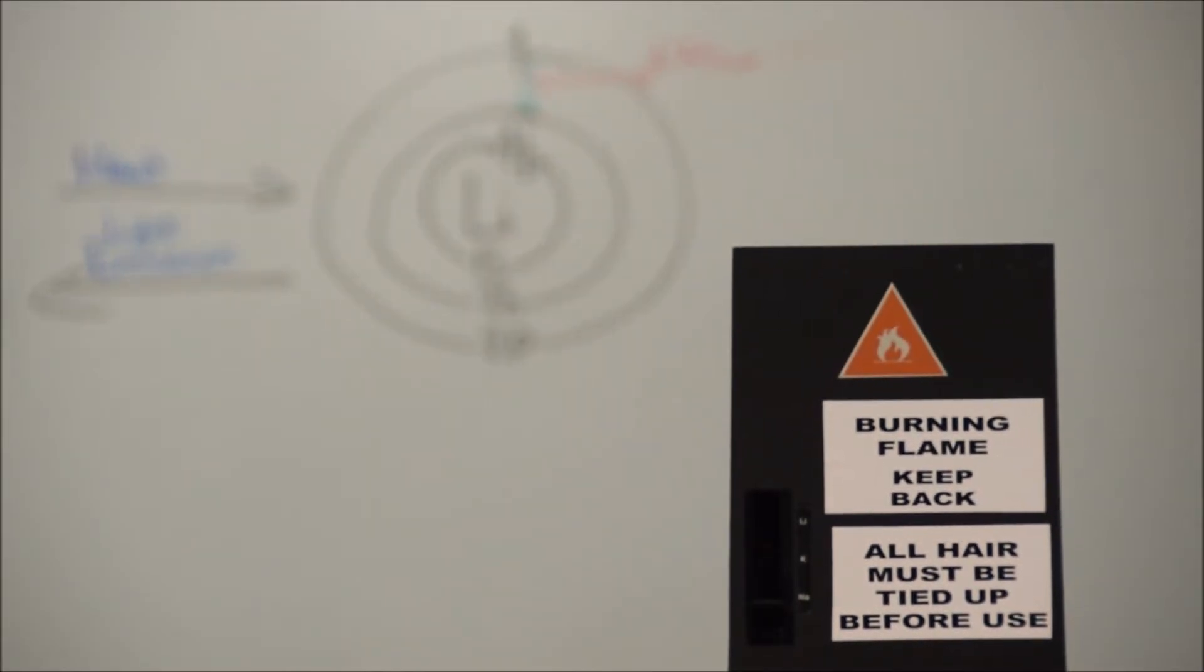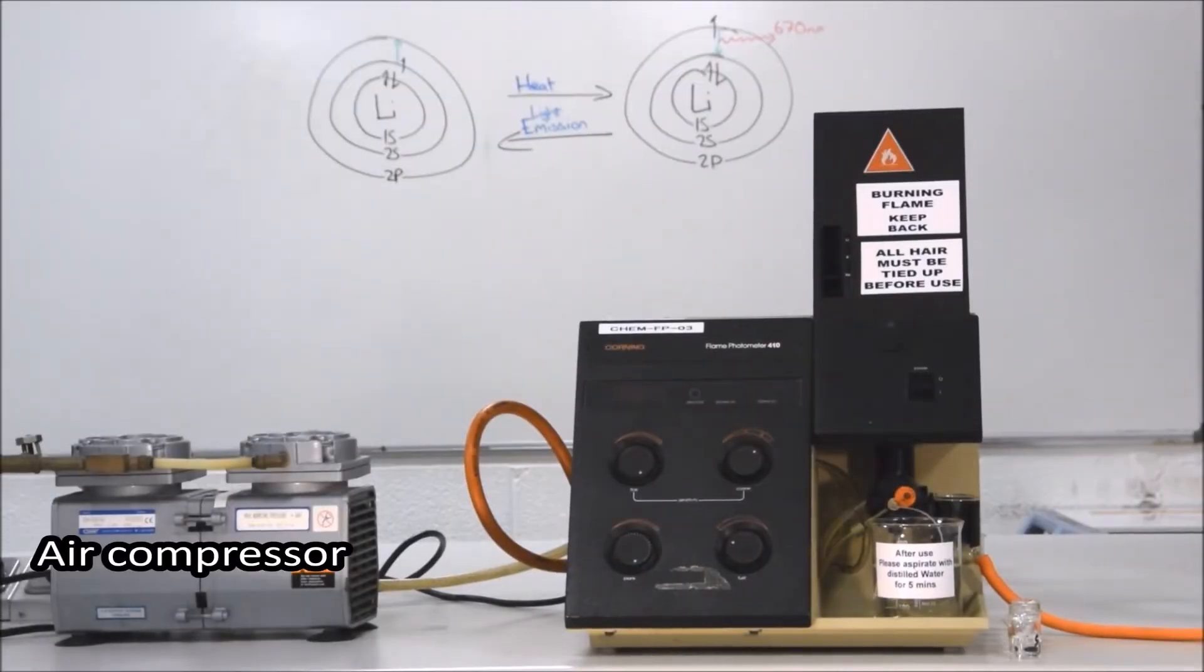With those safety precautions in mind, let's have a look at the basic operation of a flame photometer. The first thing we turn on is the air compressor. The air compressor provides a consistent supply of air and also allows for the sample intake to operate correctly. Therefore you must turn it on before operating the machine.